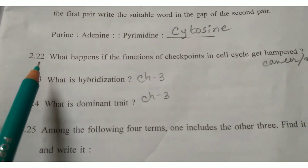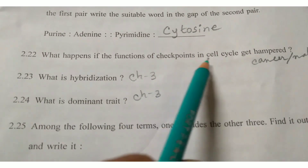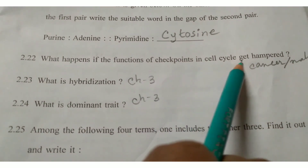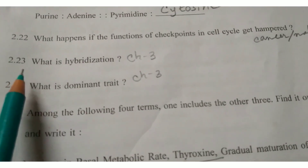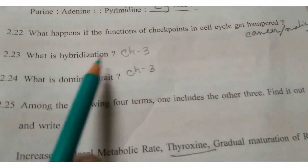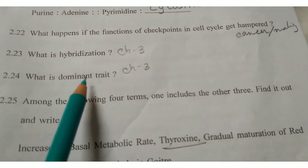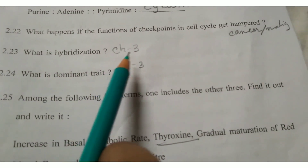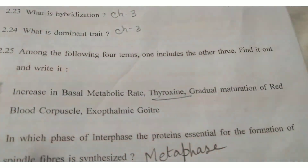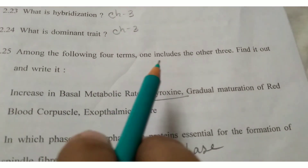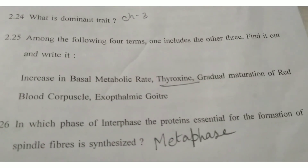Question 2.22: What happens if the functions of checkpoints in cell cycle get hampered? Write answer: cancer or malignant. Question 2.23: What is hybridization? Question 2.24: What is dominant trait? These are definition answers — you can get them from your biology book, chapter 3. Question 2.25: Among the following four terms, one includes the other three — find it out. Write answer: thyroxine.